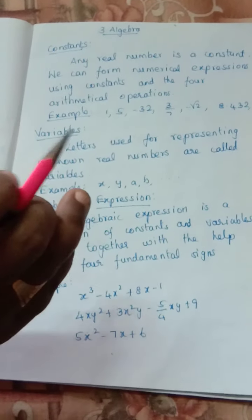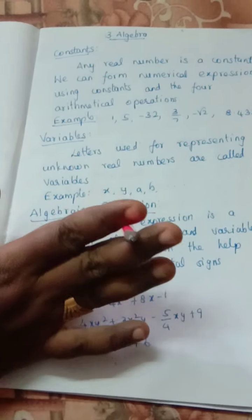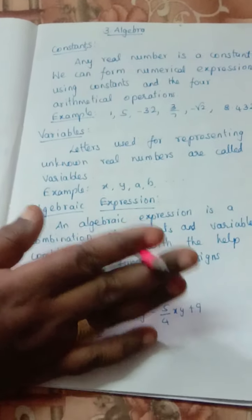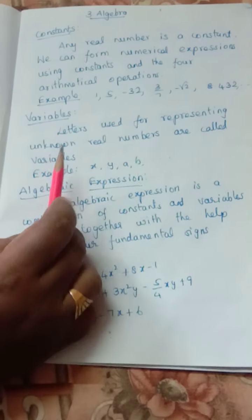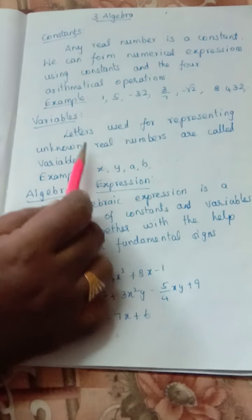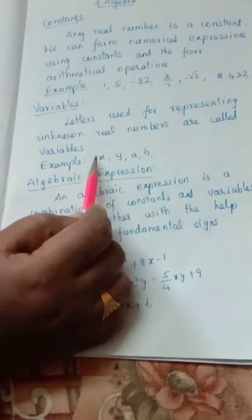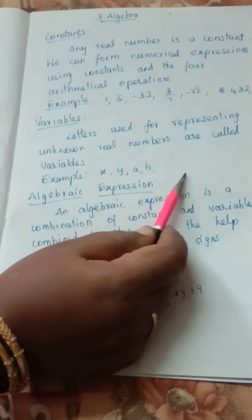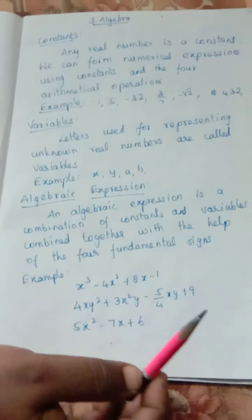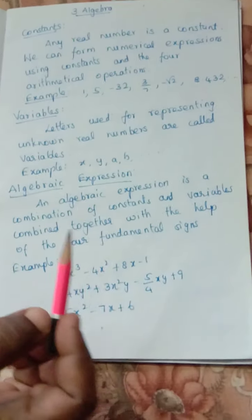Constant means constant value — no change in that value. But variable means it will be changed. We use letters like x, y, a, b, etc. to denote variables. Any letters we can use.